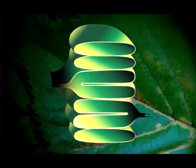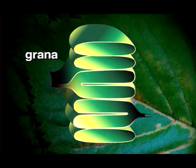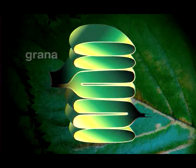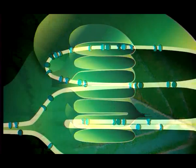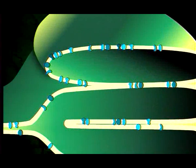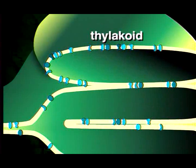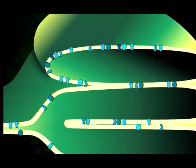Inside this fluid are structures called grana, which look like stacks of pancakes. Each granum consists of disk-like thylakoids. A thylakoid is formed of membranes that enclose a compartment called a lumen.